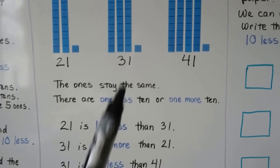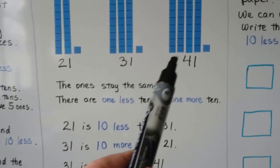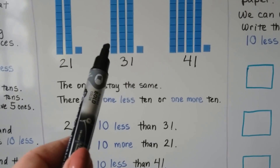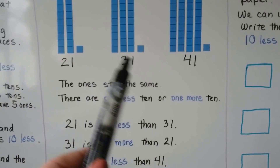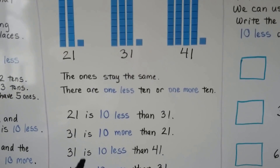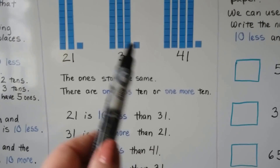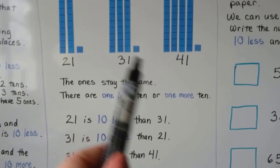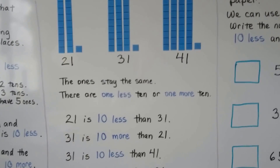31 is 10 less than 41 — it's missing a 10. This one has 4, that one has 3. And 41 is 10 more than 31 — it's got 1 more 10 than that one.